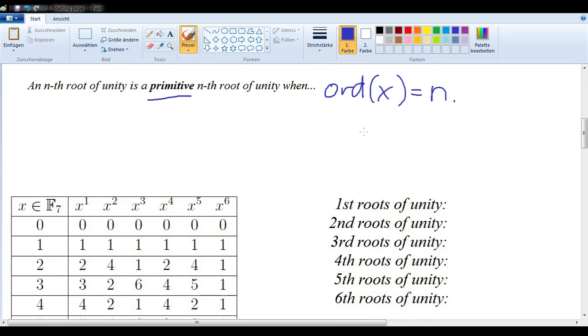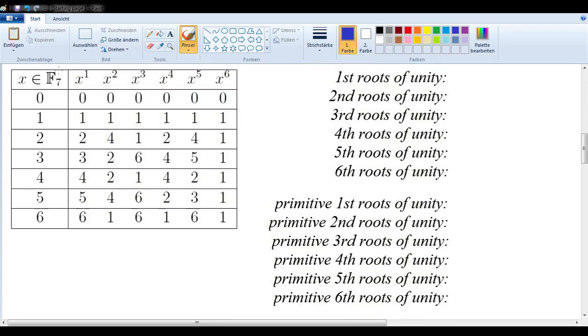Let's take a look at an example. We'll take the field F7 with these elements raised to these powers. Let's start with the third roots of unity. We want, in other words, the solutions to this equation: X to the third equals 1.